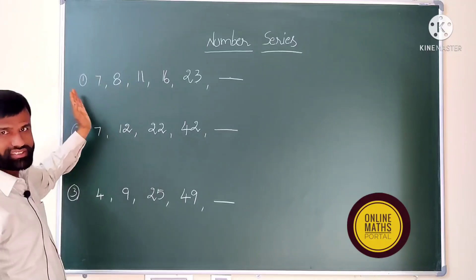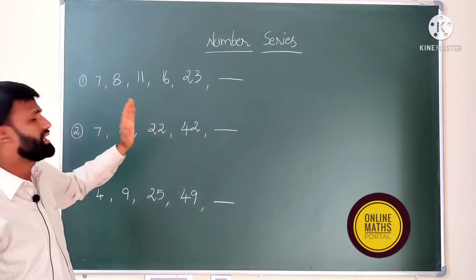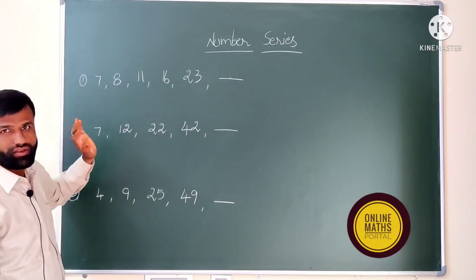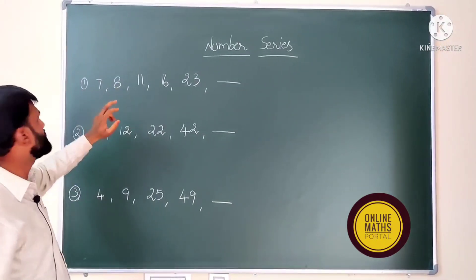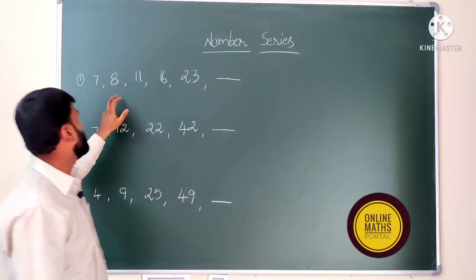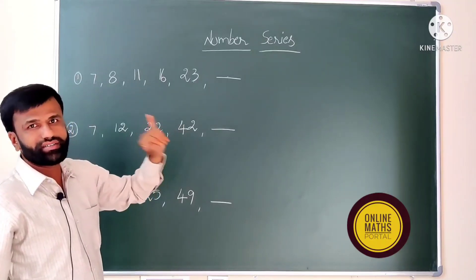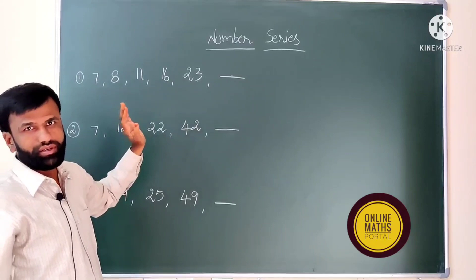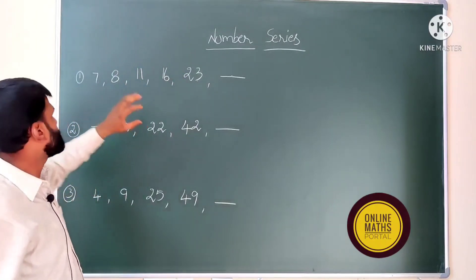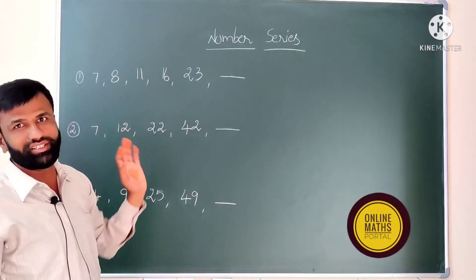In the same sense, if numbers are in descending order, we again have two choices. If the gap is a little bit less, we use subtraction. If the gap is a little bit more, we use division. The logics we use are: additions, additions with squares, additions with cubes, multiplications, squares, and cubes. If we understand this, we will solve questions very easily within less time.